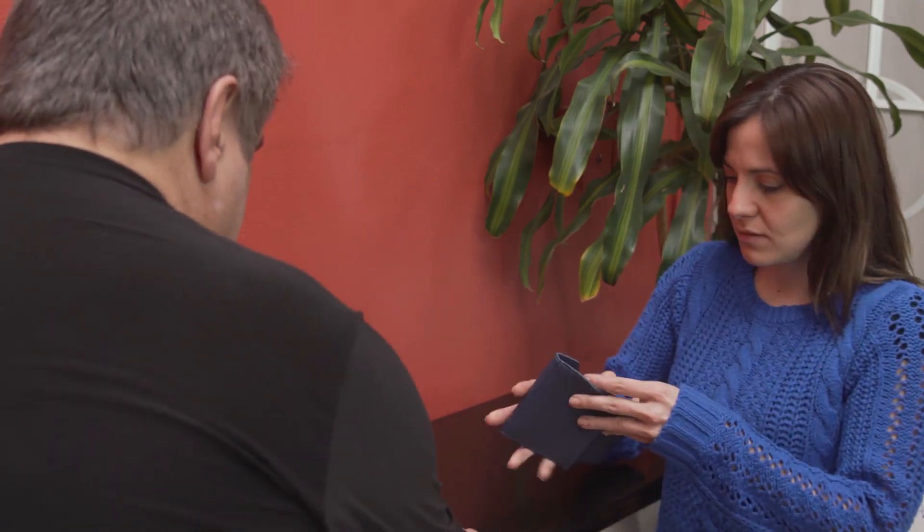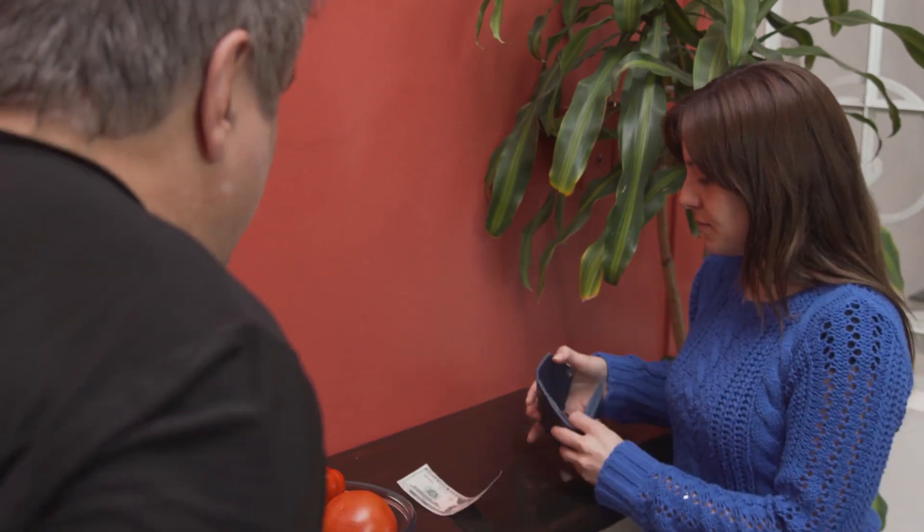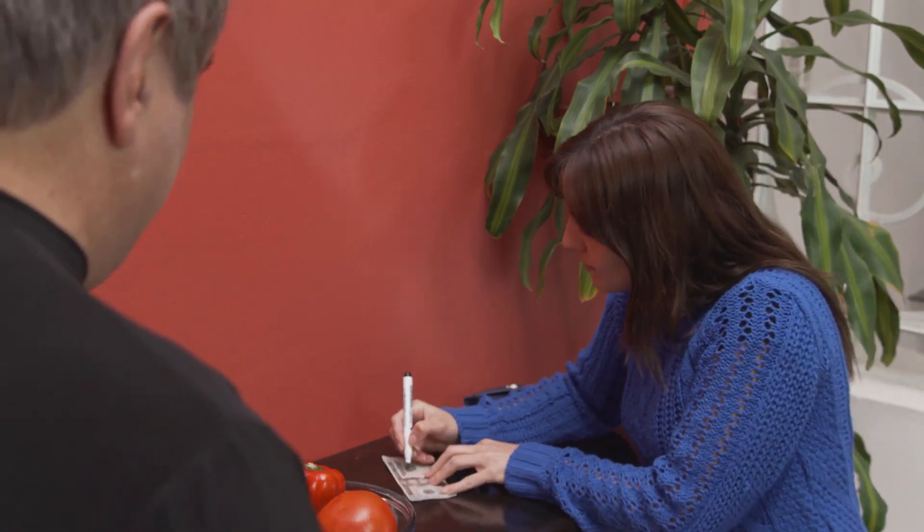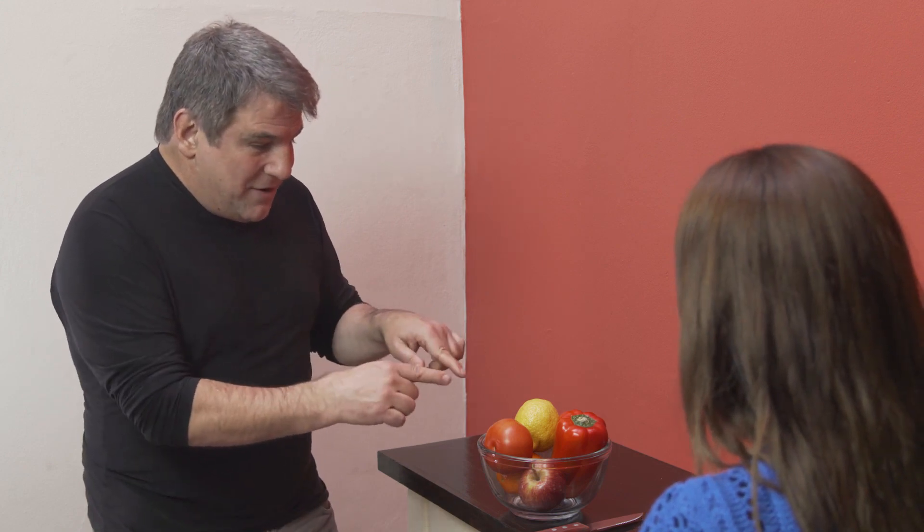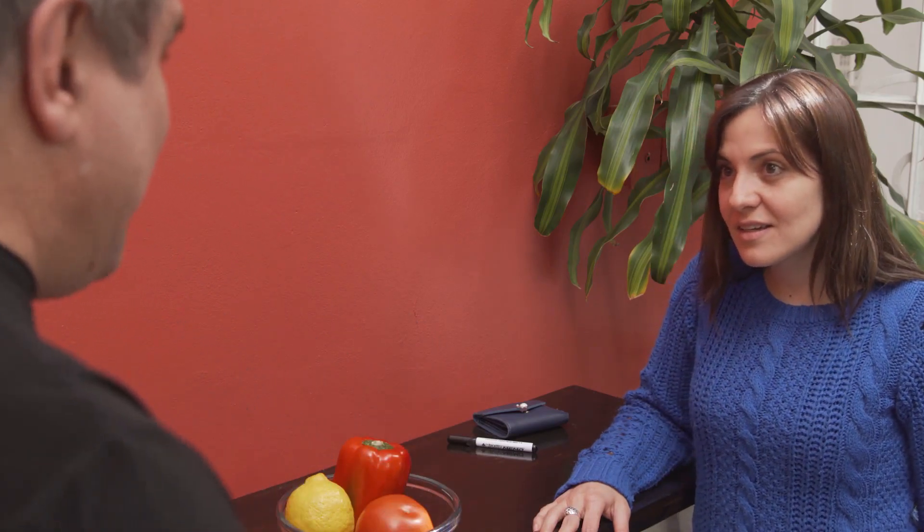The magician asks the spectator to take a bill and sign it to identify it. The bill is folded many times until it disappears completely in the magician's hands. The spectator freely chooses any fruit.